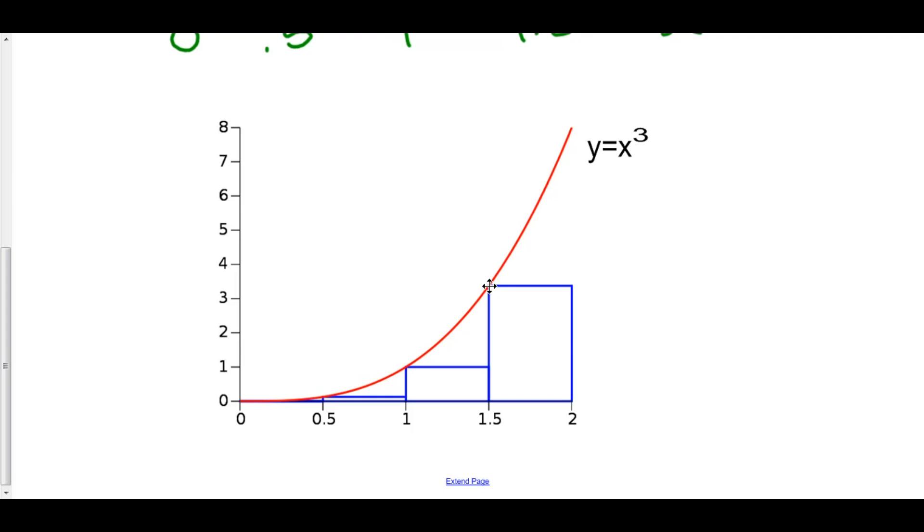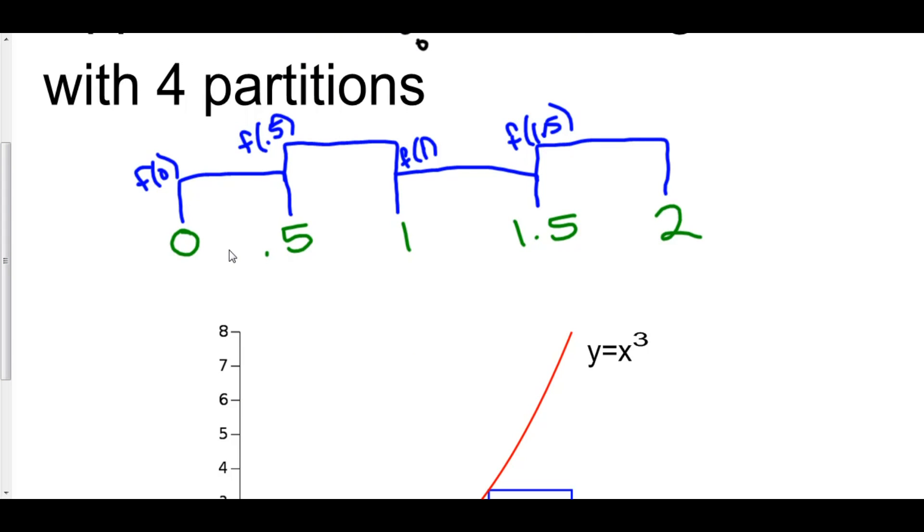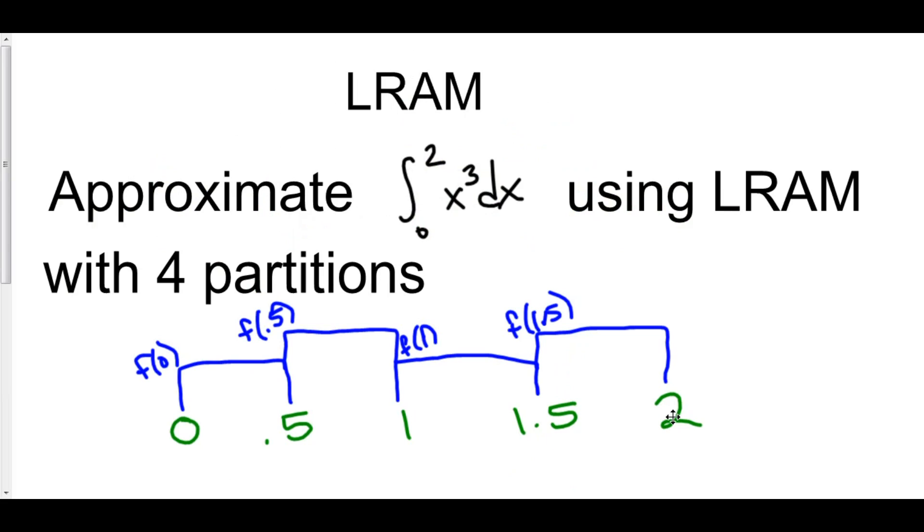So even without drawing the graph of x cubed and having to draw your rectangles in there, which takes a really long time, we could have just looked at this particular chart right here where we created these x values by looking at the total space from 0 to 2 and how many partitions we have, and we just drew out those different x values. And then we created rectangles on top to be able to visualize it.